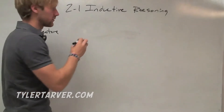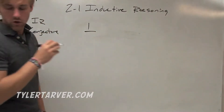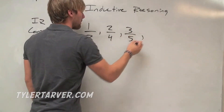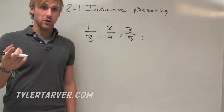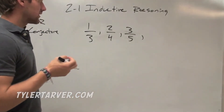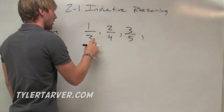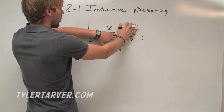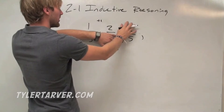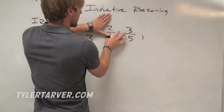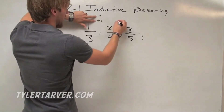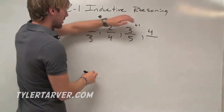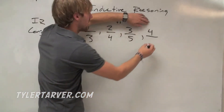Let's do another example: 1/3, 2/4, something/something, 3/5. Don't be scared of the fractions — it's not that bad. Look at the numerators: from 1 to 2, you add 1; from 2 to 3, you add 1. So the missing numerator is going to be 3 plus 1, which is... actually the next numerator is 3 already shown, so the missing one is 3. Now look at the denominators: 3, 4, 5 — the next number is 6. So the missing fraction is 3/6.